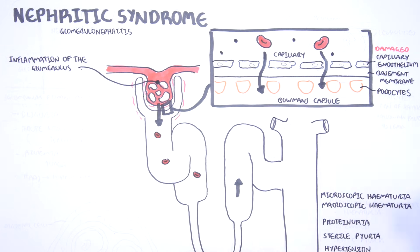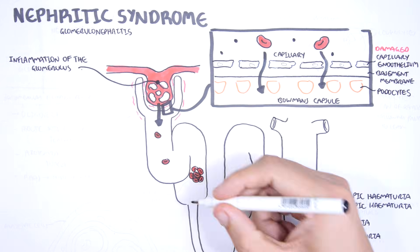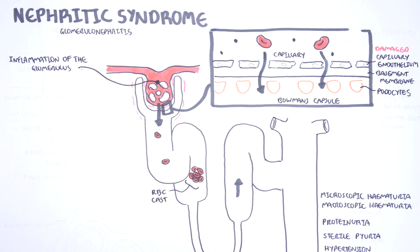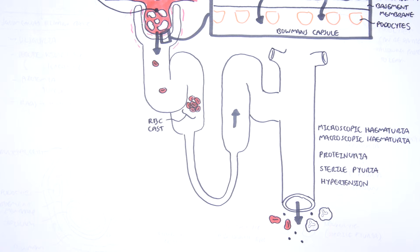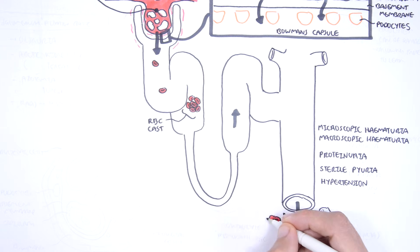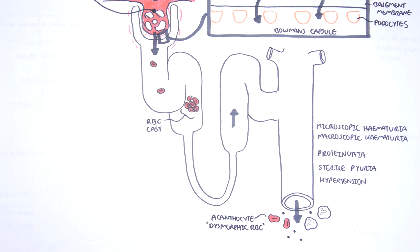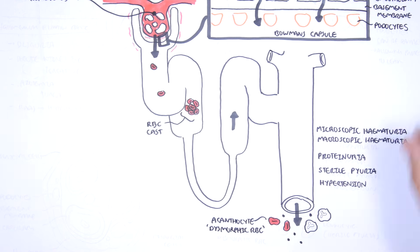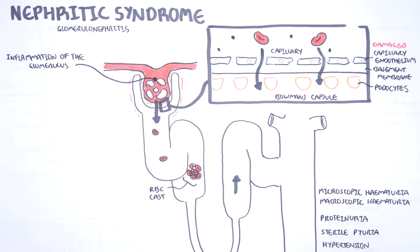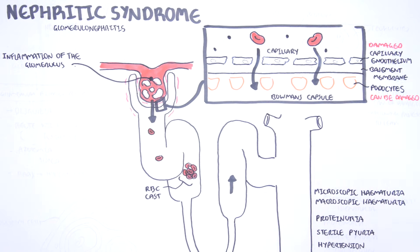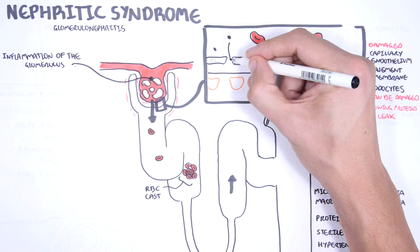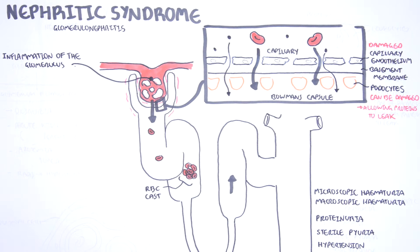The red blood cells can stick together in the renal tubule, forming red blood cell casts. Red blood cells that pass through the casts and tubules can become dysmorphic red blood cells called acanthocytes. The damaged podocytes, which normally prevent proteins from leaking, cause proteinuria, typically less than 3.5 grams in 24 hours.